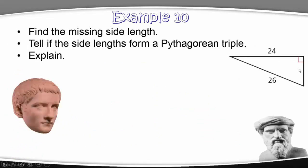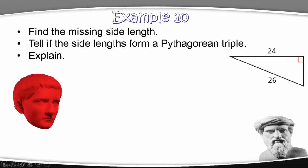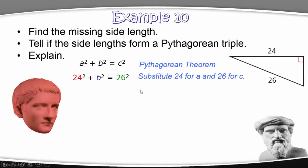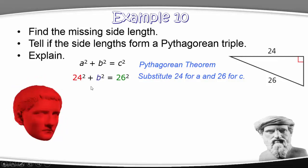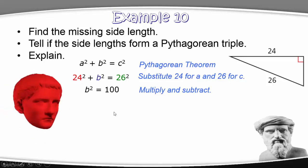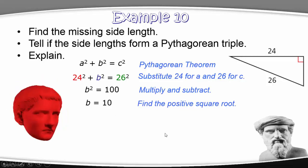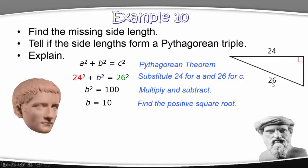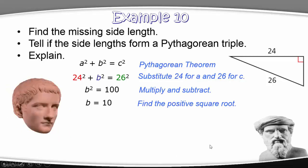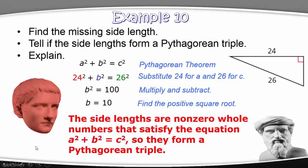In Example 10, we're missing a leg. We make 24 equal to A and solve for B, with the hypotenuse being 26. Multiplying and subtracting as in a regular algebraic situation, we find B equals 10. Since 10, 24, and 26 are all whole numbers and they obey the Pythagorean theorem, this is indeed a Pythagorean triple.